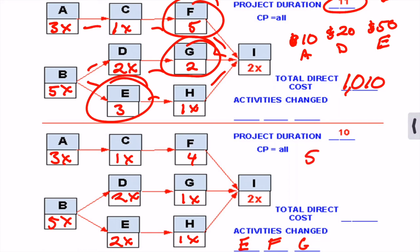F is the only one that we could crash and it was not going to help us. We changed E, we changed F, and we changed G. E was $50, F was $200, and G was $30. If we add that once again as a running total here, that's $1,290 to get it down to time period 10.